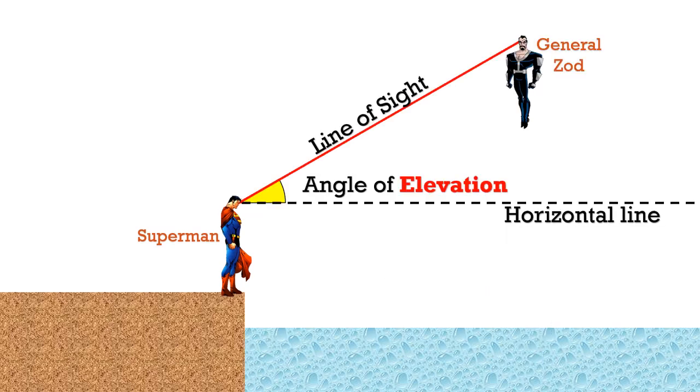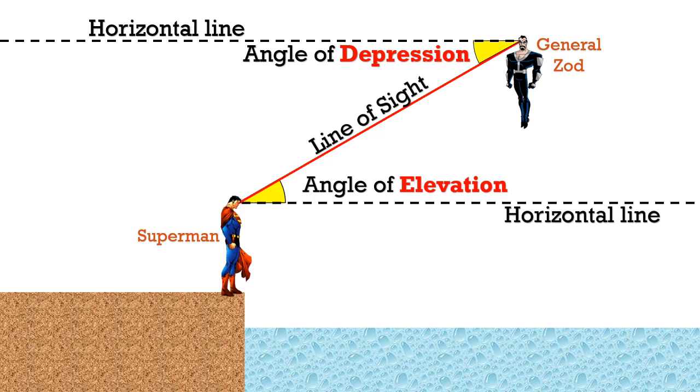Now to recap, when Superman looks at General Zod, his line of sight makes an angle of elevation above the horizontal line. Whereas from General Zod's point of view, General Zod is making an angle of depression when he looks down at Superman. These two angles are equal based on alternate angles.